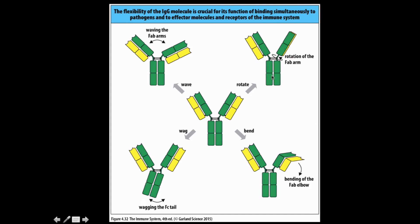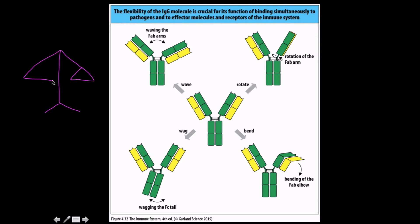Variation in the Fc or constant region creates structural variation. It's a balancing act between the stability provided by disulfide bonds on one hand, and the flexibility of the hinge regions on the other. More flexibility gives stronger function, but more disulfide bonds give greater stability. These two properties must be balanced against each other across the IgG subclasses.